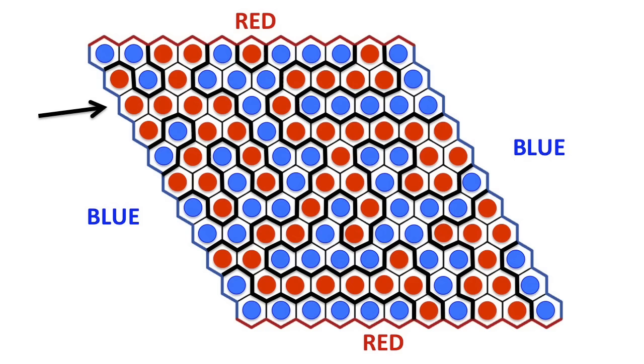So for example, if there's a red hexagon touching the blue side, we highlight the edges where they meet.